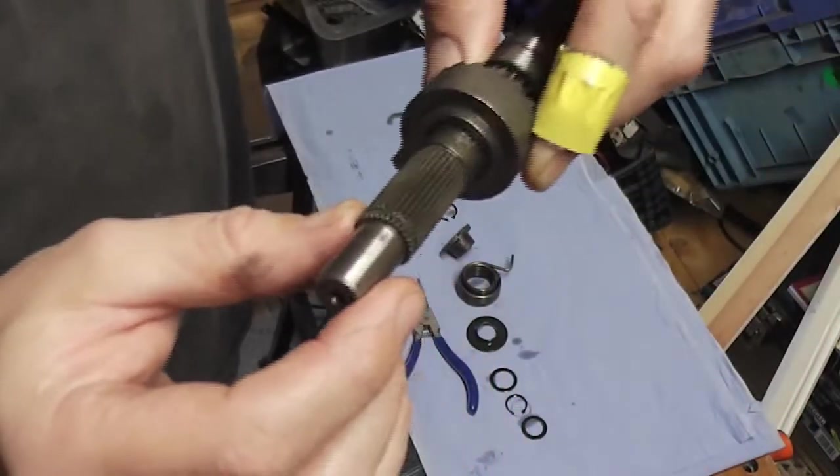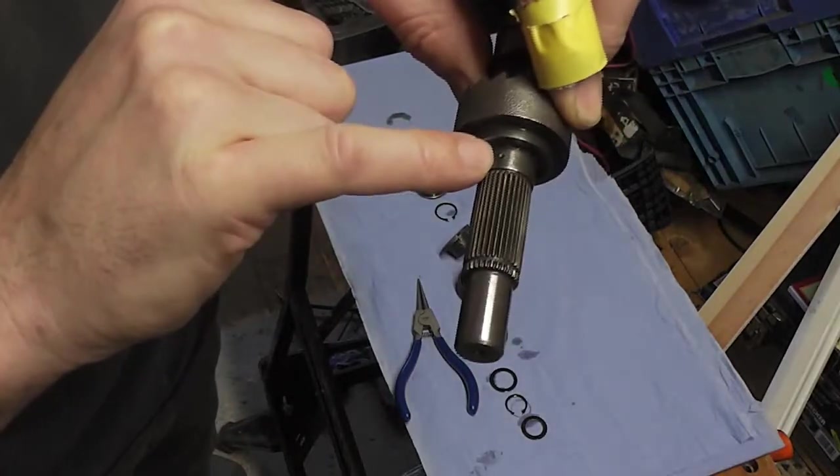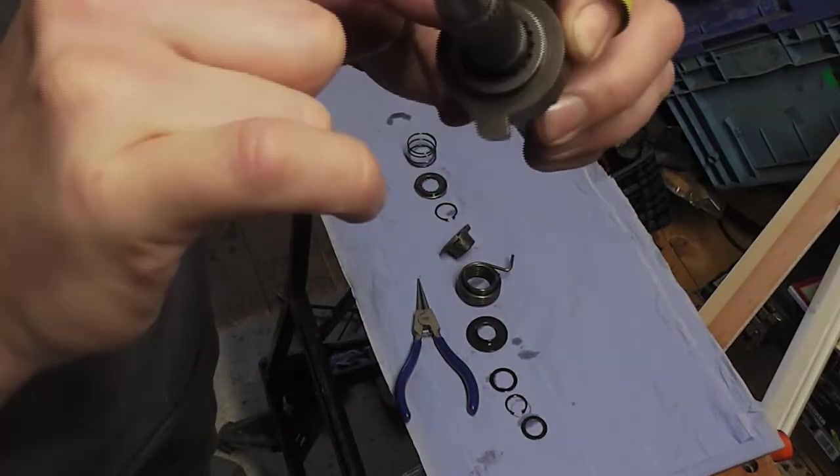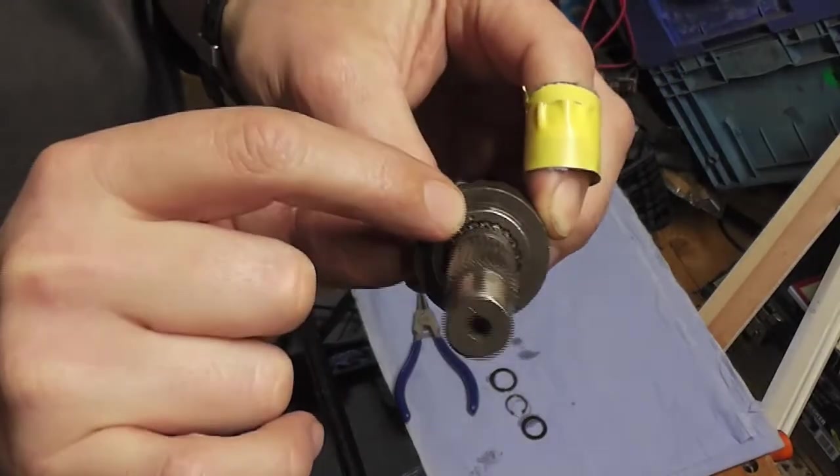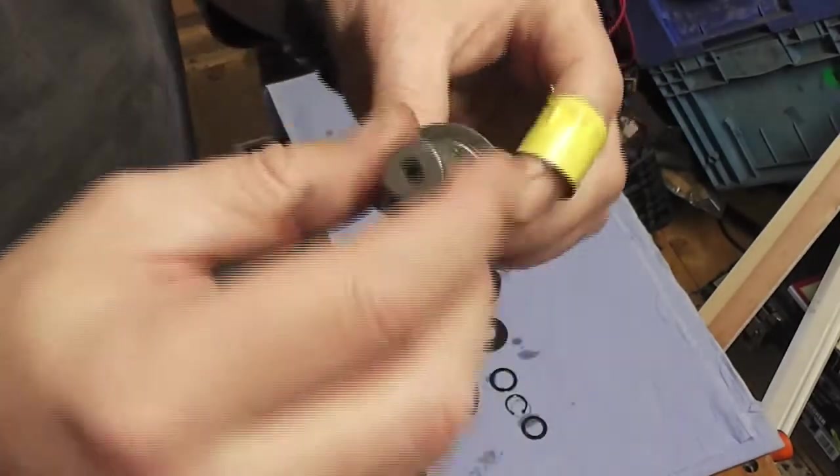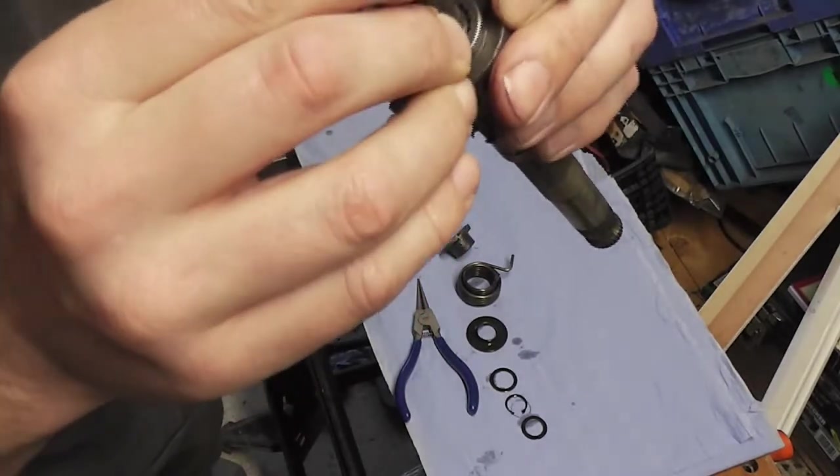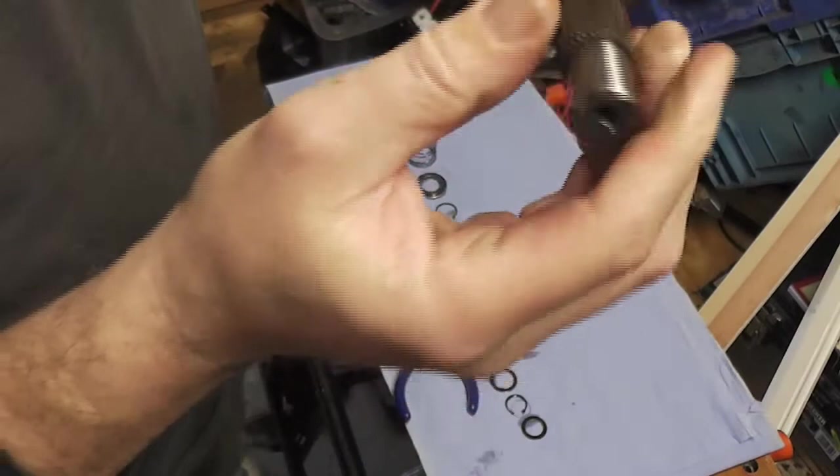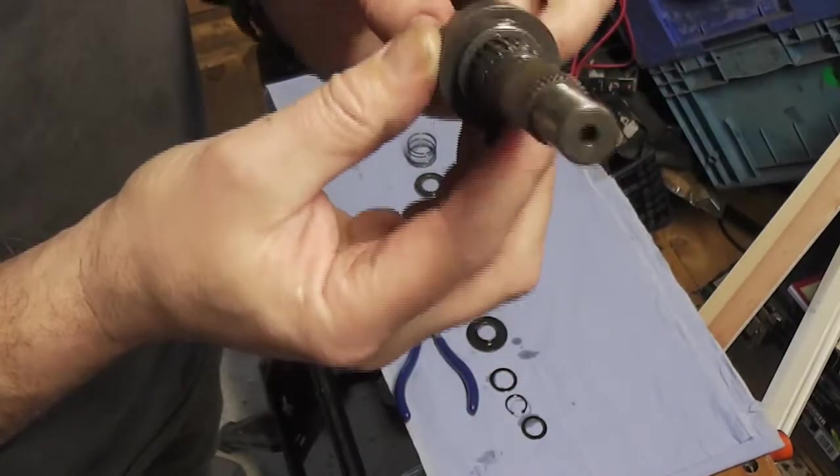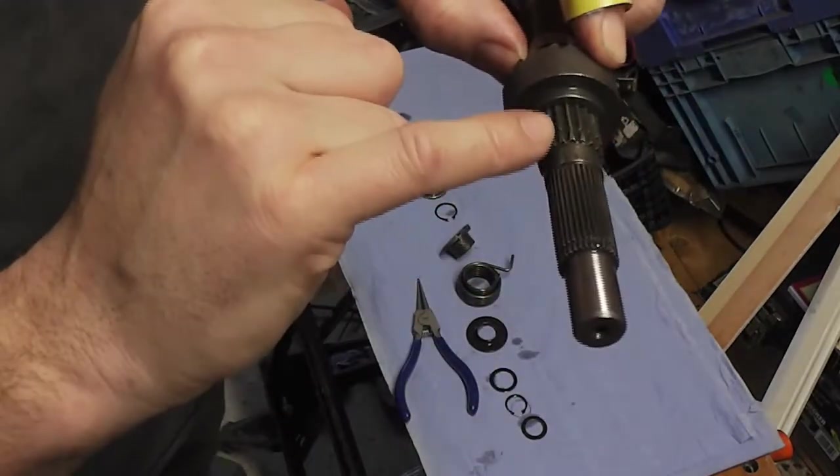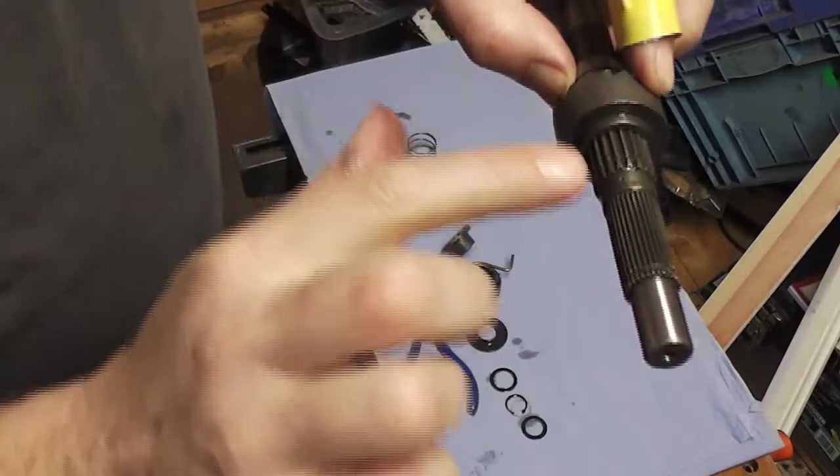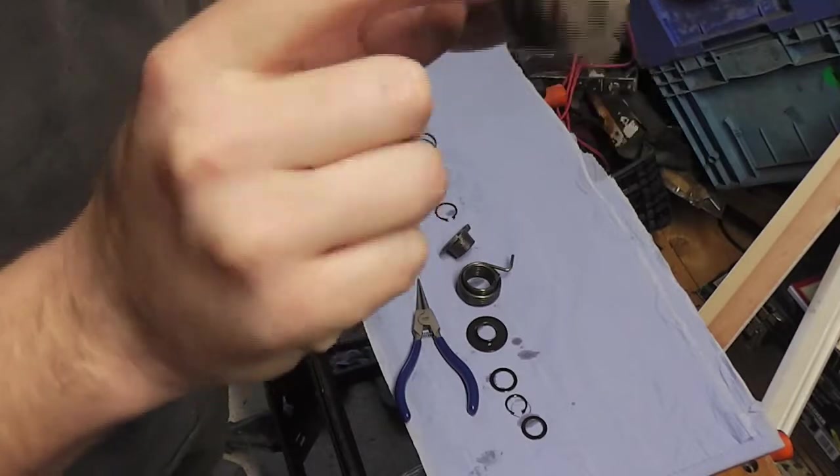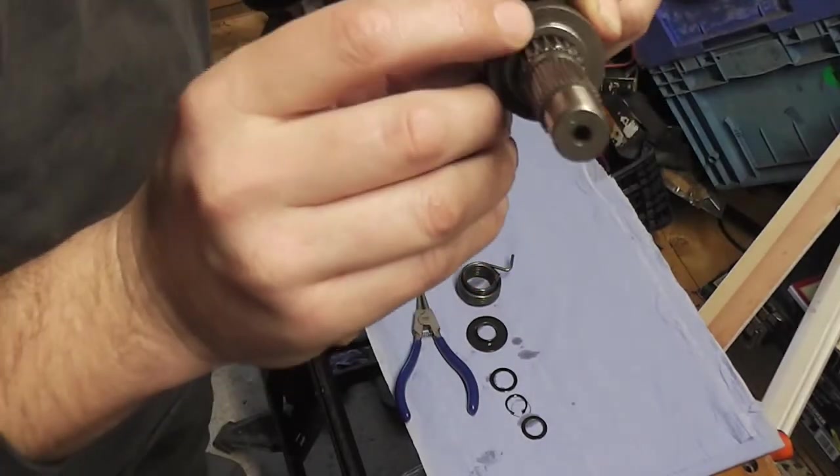And if you can see, this dimple here on the shaft has to line up with the dimple on this part. So at the moment it seems like it's in between splines, but that's as close as you can get it. But it's important. Otherwise your kickstart won't work properly. This dimple has to line up with the dimple on this part.